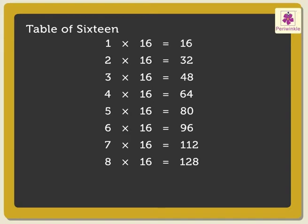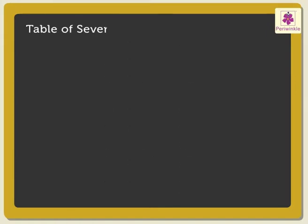9 × 16 are 144, 10 × 16 are 160. Next is the table of Seventeen: 1 × 17 is 17, 2 × 17 are 34.